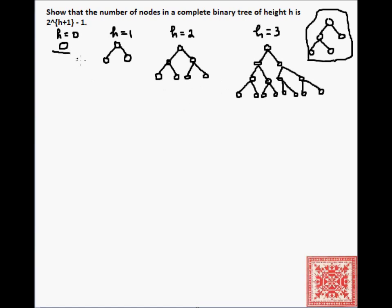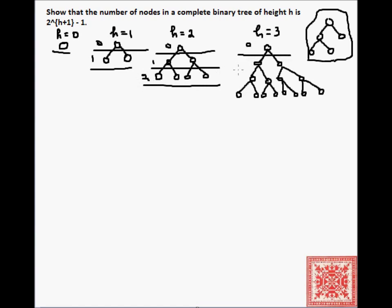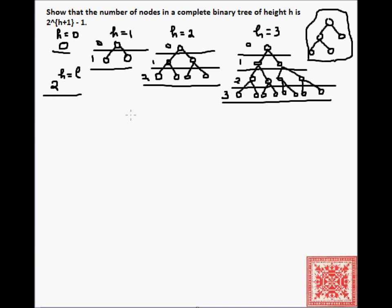Another thing to observe is that there is a nice correspondence in complete binary trees between levels and heights. This is level 0, this is level 1, this is level 2, this is level 3, and so forth. We can quickly observe that the number of nodes at level h is equal to 2 to the h. So the number of nodes at level 0 is 2 to the 0, at level 1 is 2 to the 1, and so forth.